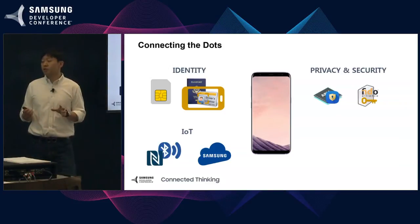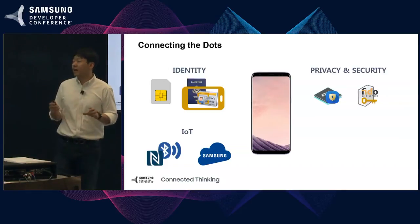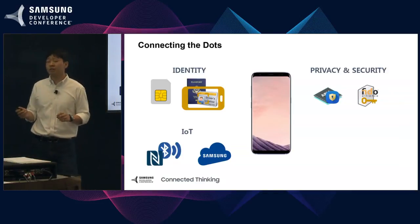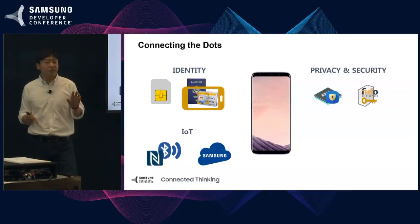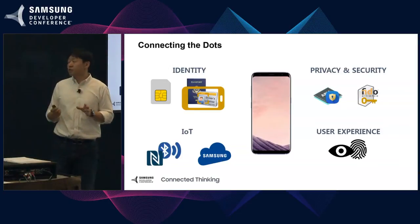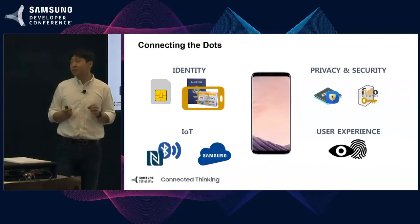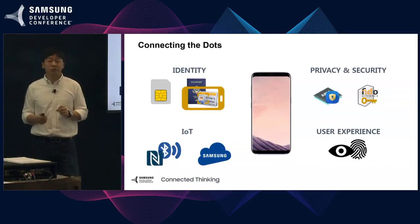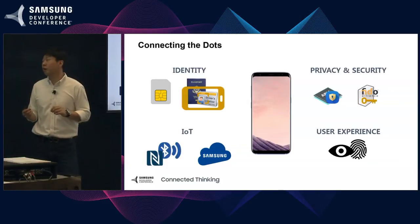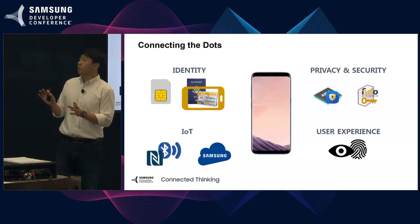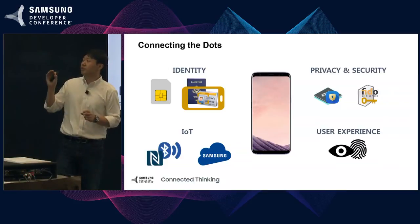From an IoT perspective, we have NFC and Bluetooth that can connect with multiple devices, and also Samsung Cloud that can store non-sensitive data to enhance convenience such as settings or preference information. From a user experience perspective, we're continuously investing in new biometric sensors — we have iris and fingerprint, and there will be more to come. By combining all these different components, we can actually address all four of the challenges we mentioned.